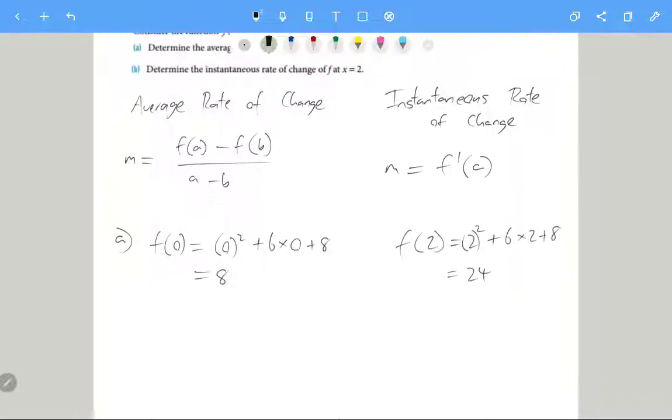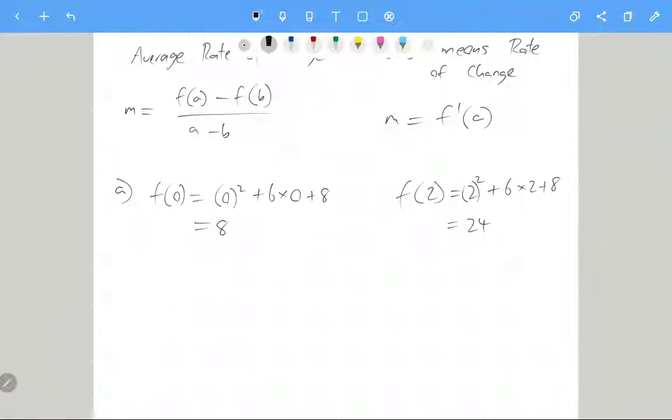Alright, so now that I've worked out that, now I can just substitute into the average rate of change formula. M equals 24 minus eight, all over two minus zero. Same as calculating a gradient between the two points.